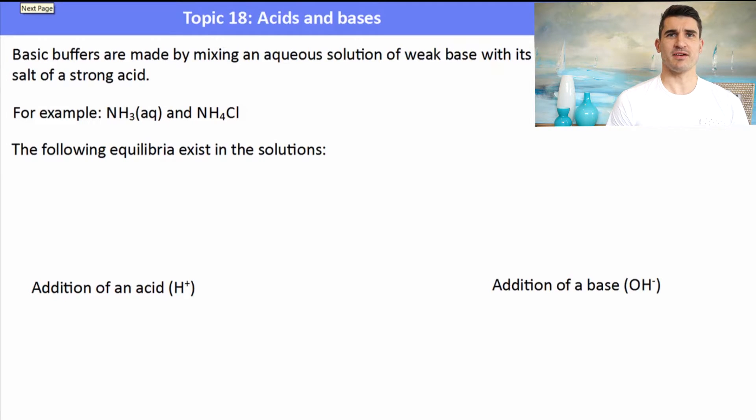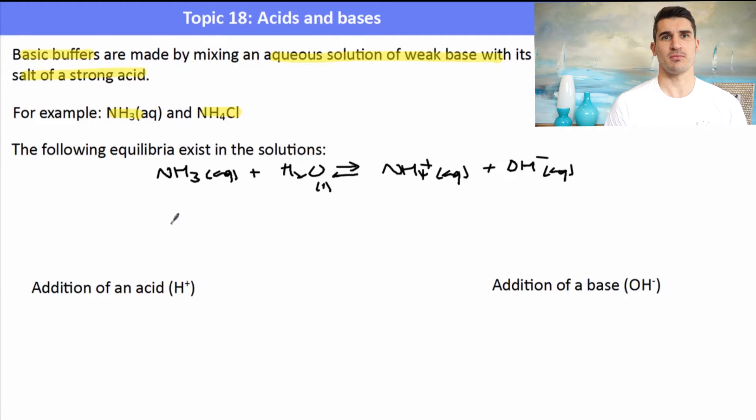If we needed to make a basic buffer, we need to have a weak base with a salt of a strong acid. So for example, if we have NH3 and NH4Cl, that is NH3 the base and the salt NH4 plus has come from the addition of HCl. So we've added HCl to NH3 to form NH4Cl. But in the solution we have ammonia that can accept a proton from water acting as a base to form NH4 plus and OH minus. We know that it's a weak base so most of the ions in the solution will still be NH3. NH4 plus, ammonium, is a weak acid and it could donate a proton to water to form hydronium and then an ammonia molecule.